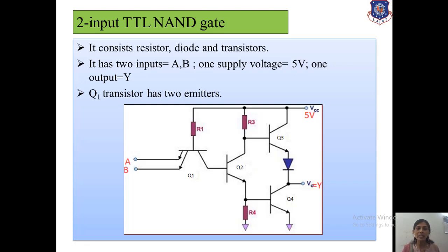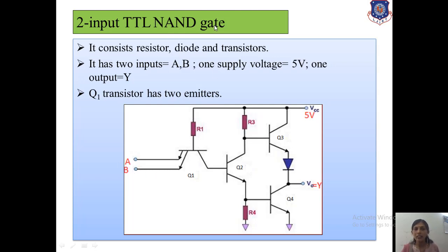The most important point to remember is that transistor Q1 has two emitter terminals with arrows — these are NPN transistors. Q1 has two emitter terminals, which is why we can apply the two inputs A and B here, and realize at the output a two-input NAND gate. This is the circuit of a two-input TTL NAND gate.